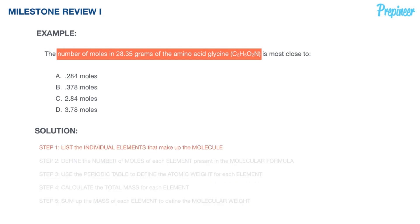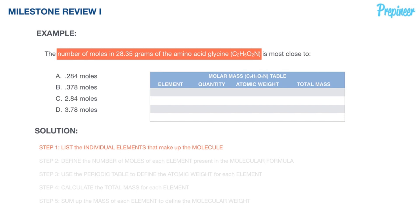We'll organize all of our work in table format. This isn't something expected on the FE exam itself, but as we're preparing for the exam it's good to keep everything organized to ensure you completely understand where the information is coming from and how it is being derived, so you can build those connections and recall them on the spot when needed.